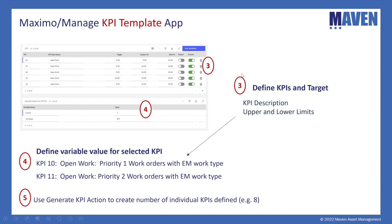After you define the variables, you define the individual KPIs. Scrolling down, you define the KPI target information. For example, KPI 10 is open work — the variables are priority one with EM work order type. The next one changes the priority from one to two. If doing this in KPI Manager, you could duplicate an existing KPI and make the change. But a major benefit of KPI Template is the ability to make a global change to all KPIs at once, streamlining and maintaining their definitions. Once you have all variable values defined, you generate the KPIs — in this case eight variable values produce eight individual KPIs.